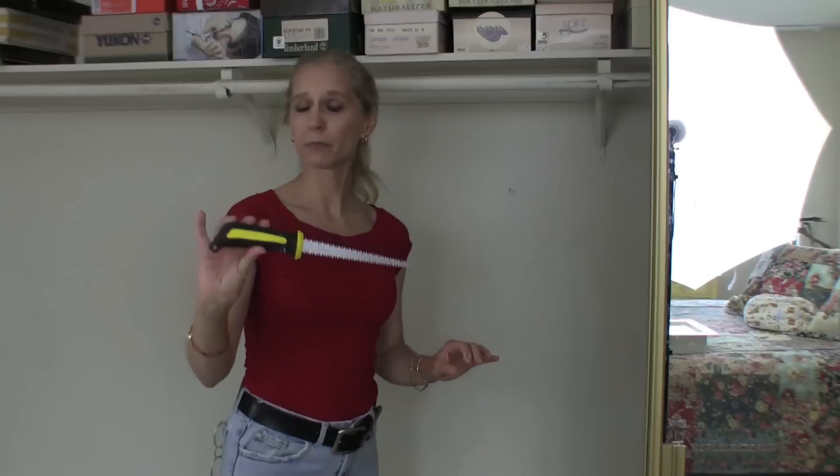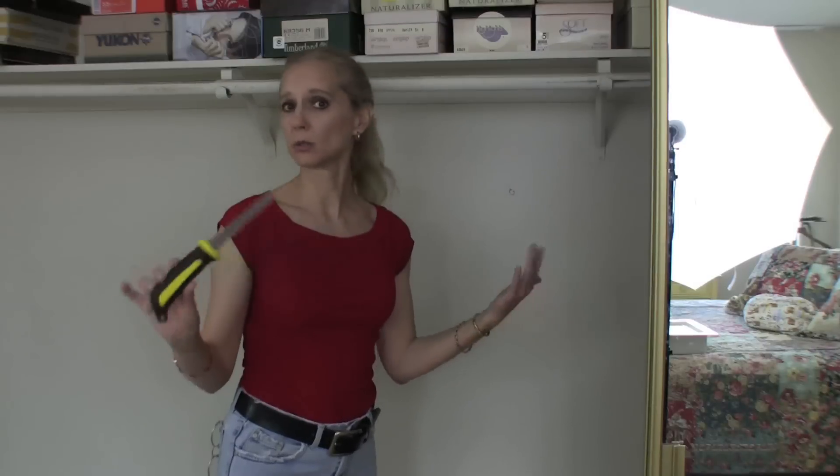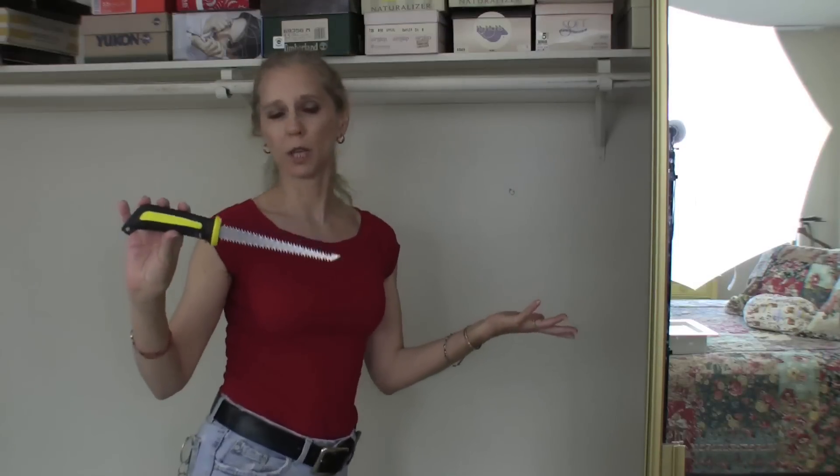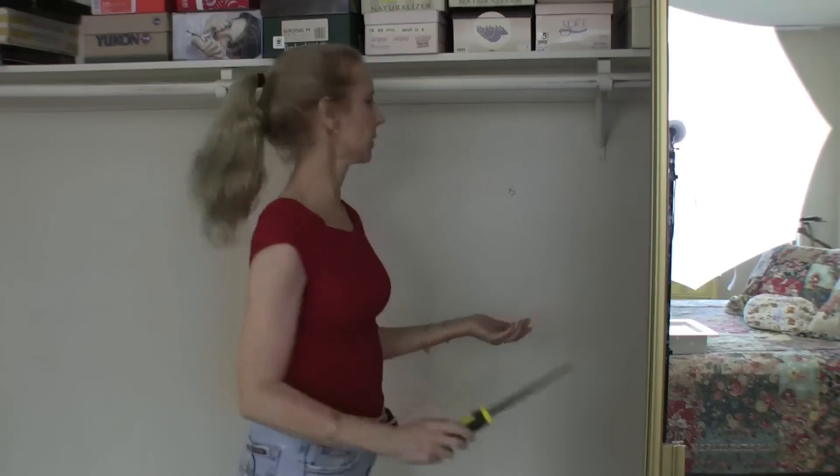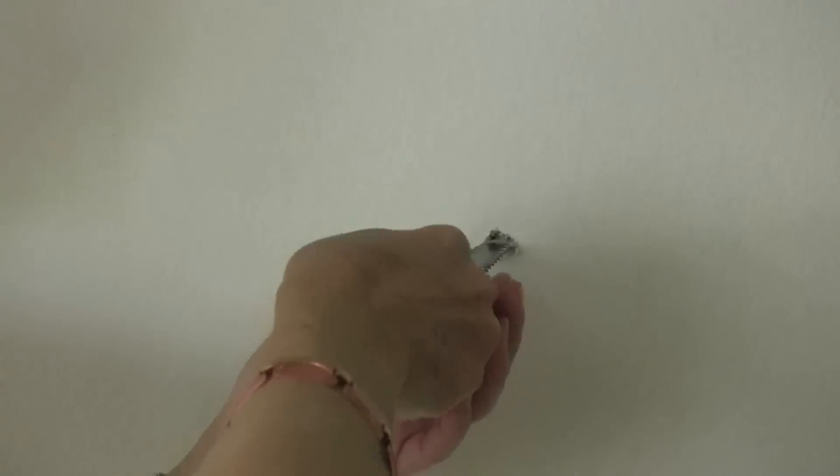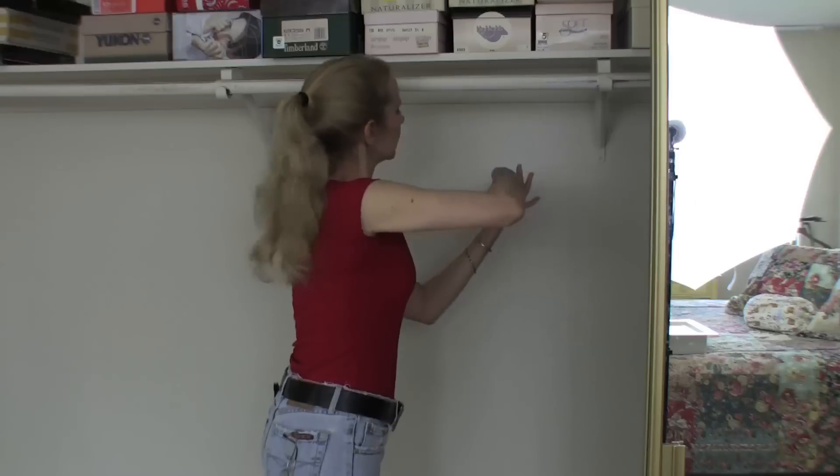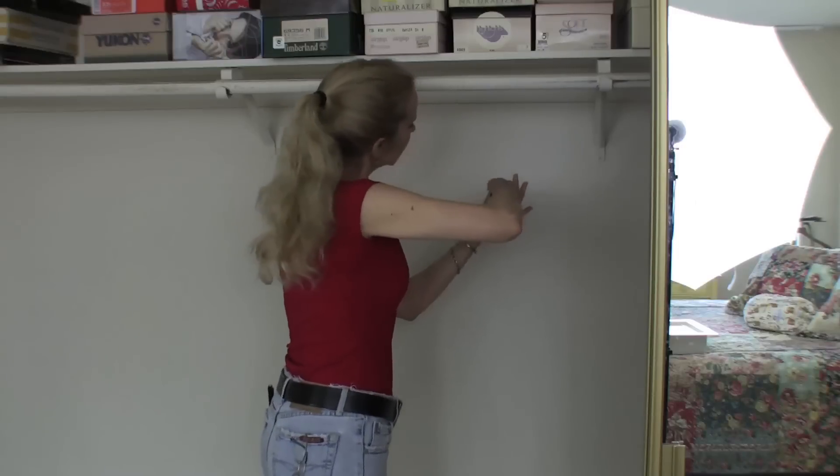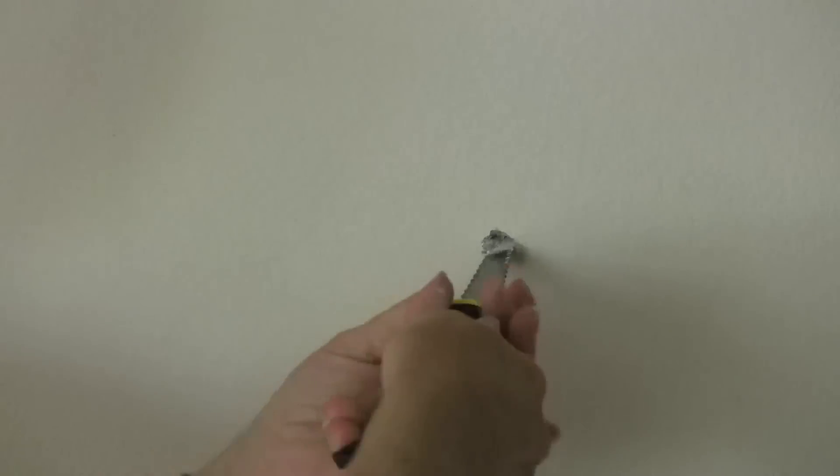So we have our drywall knife. You can use other knives, other tools. We chose a drywall knife. Basically you take your knife and just poke your hole in the wall. Once you get through, you're just going to cut your hole out.